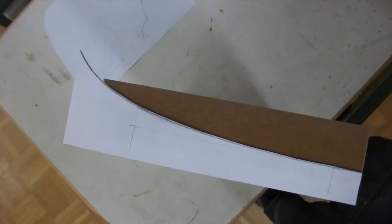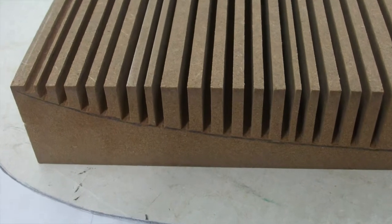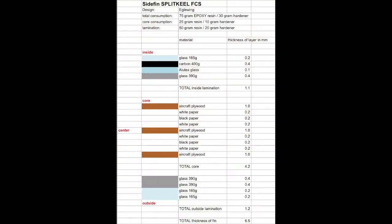The mold for the fin core I make out of medium density fiberboard. I give it a formica covering. Like this, the surface is smoother.